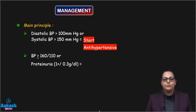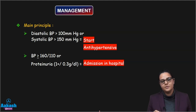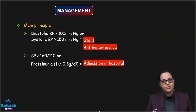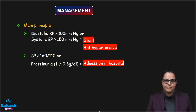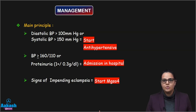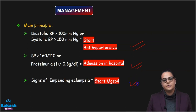When do we admit the patient? When the blood pressure is more than or equal to 160/110 mmHg, or there is presence of proteinuria, then we will admit the patient. Presence of proteinuria 1+ is clearly a diagnosis of preeclampsia, so we admit all patients of preeclampsia. We do the basic blood workup, check whether blood pressure is stable, do fundus examination, and only then discharge the patient. The third principle: if the patient has signs of impending eclampsia — severe preeclampsia with blood pressure more than or equal to 160/110 mmHg — then we will start magnesium sulfate.